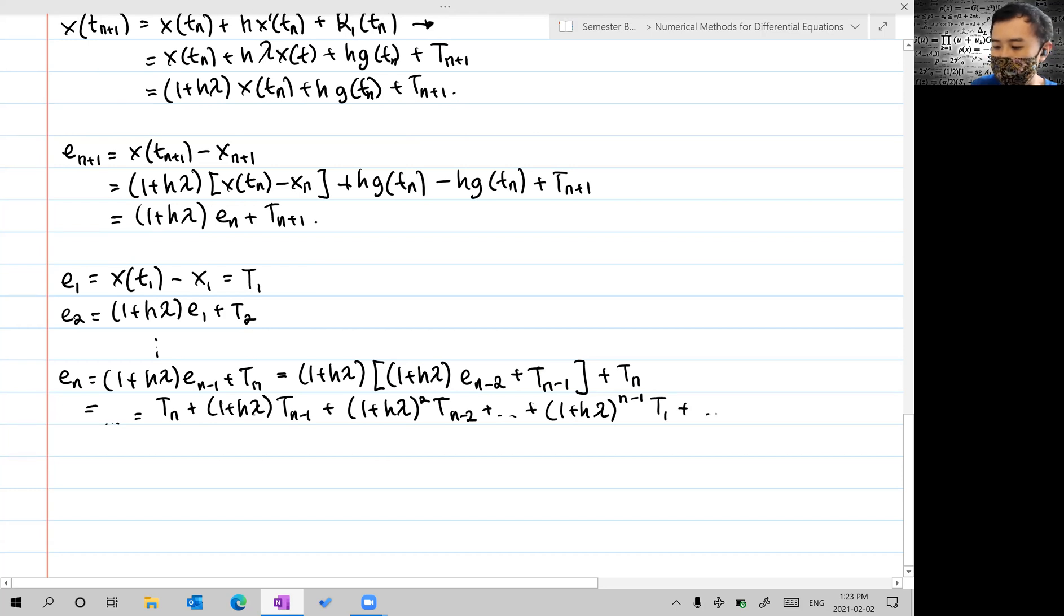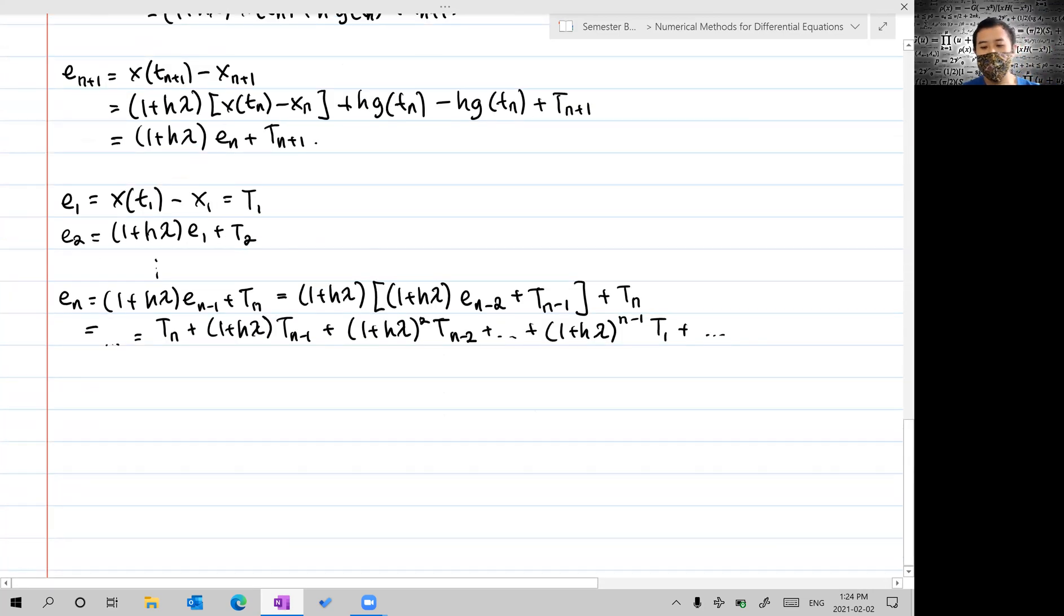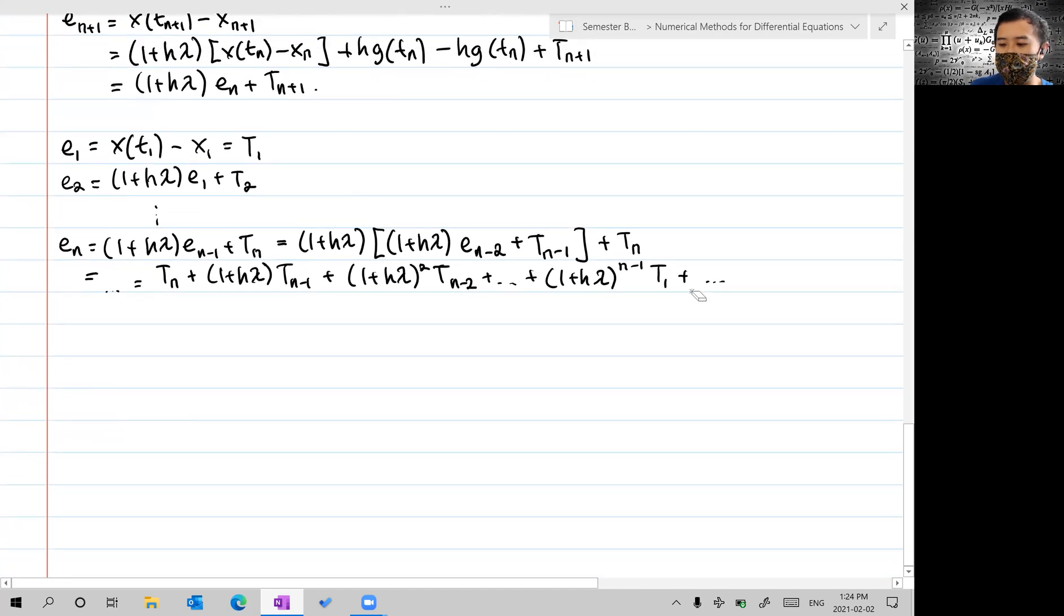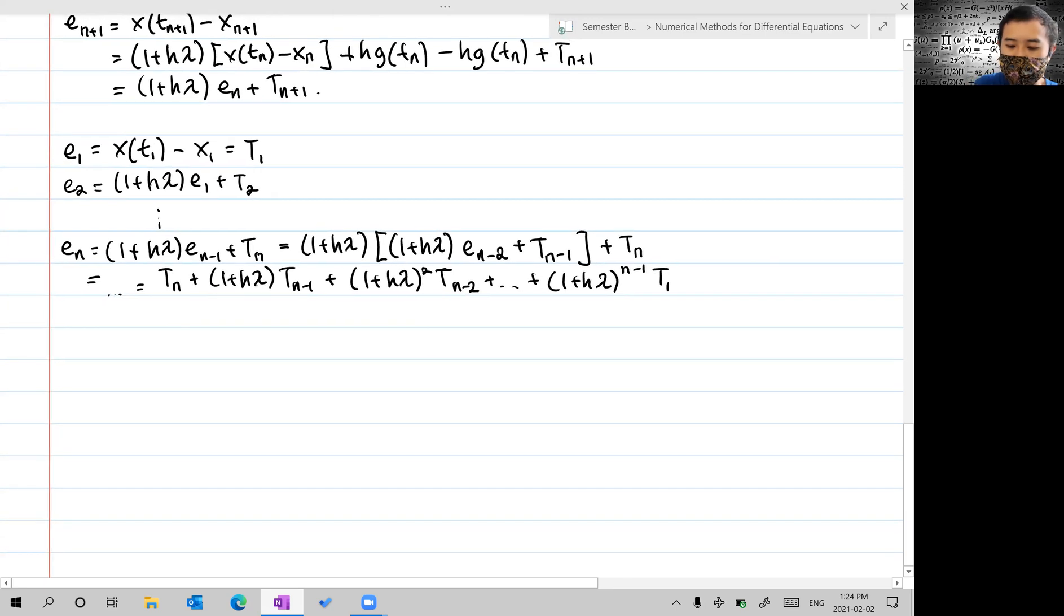For τ_0, we ignore it because it's actually the same between x(0) and x(t_0). So we can use this property.